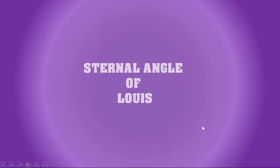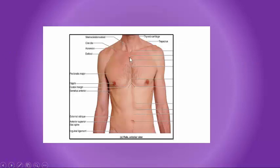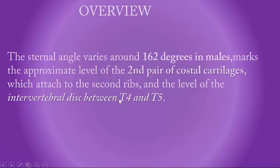Today we are going to talk about the sternal angle of Lewis — what it is, what is its anatomy, and what are all the structures that pass through at the level of the sternal angle of Lewis. You can feel it just below the jugular notch, and at the cursor you can see somewhere along this will be the sternal angle of Lewis.